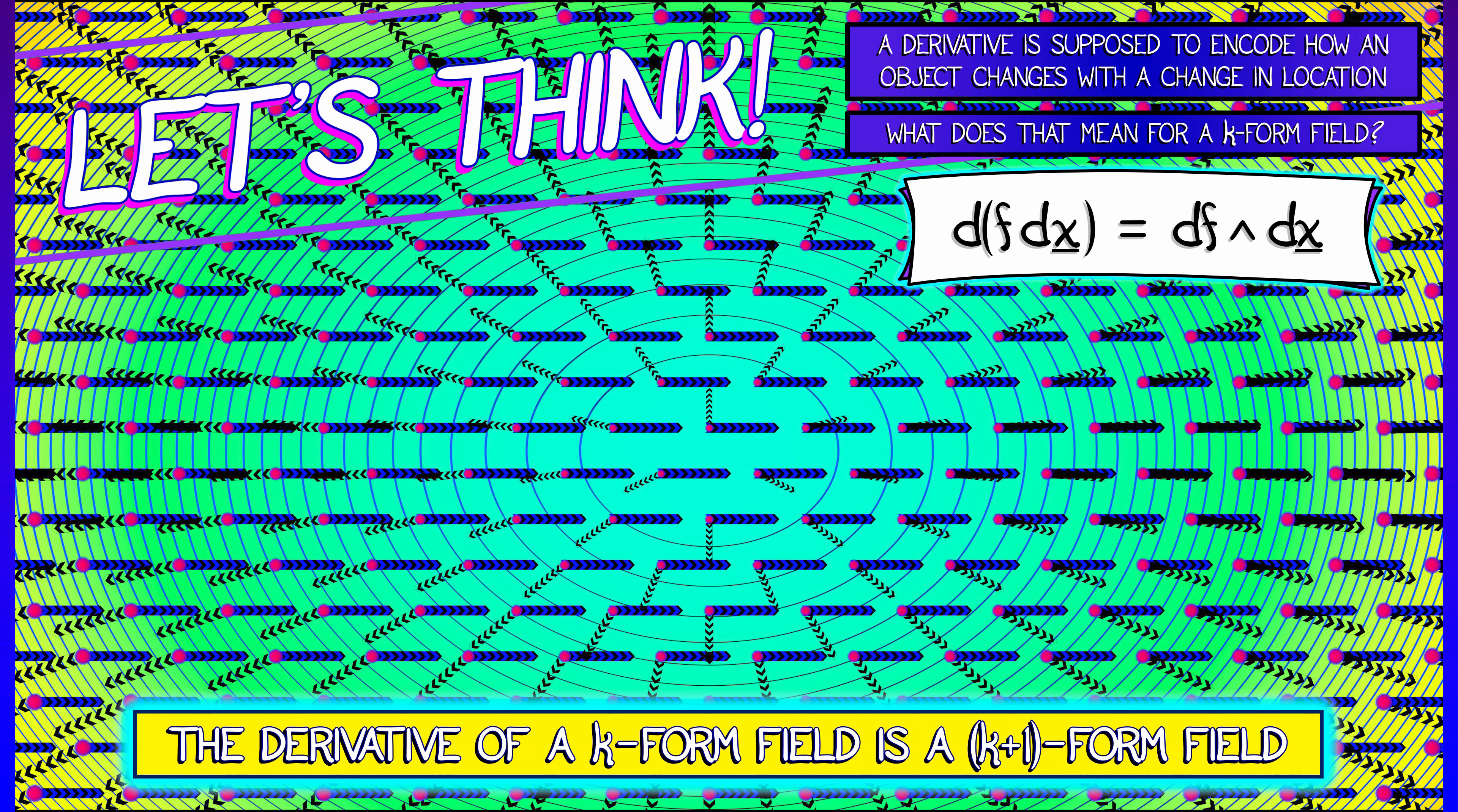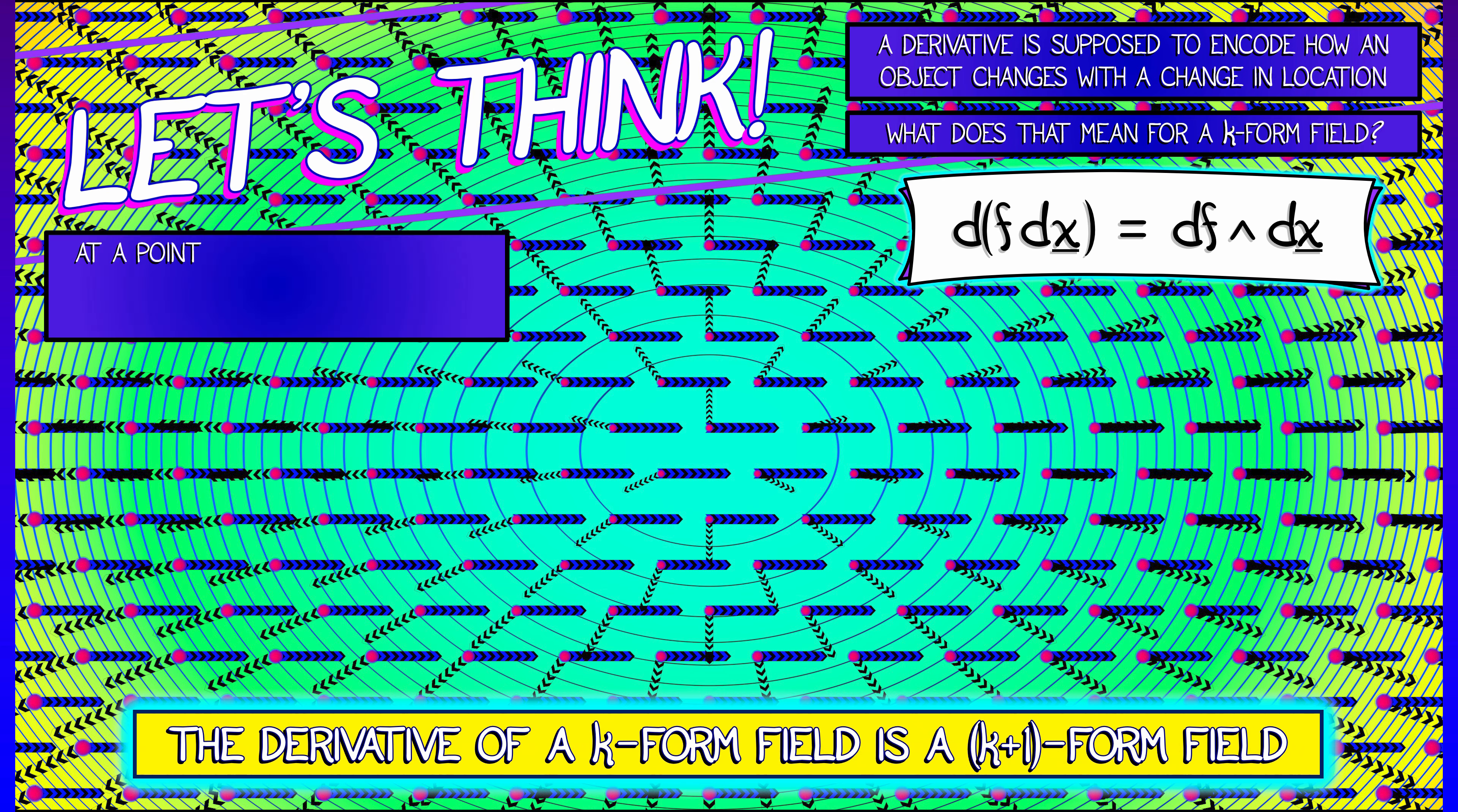So if we think about what the derivative of a k-form field really means, then at a point A, a basis k-form field dx takes oriented projected k-dimensional volume. f dx rescales that by f of A.